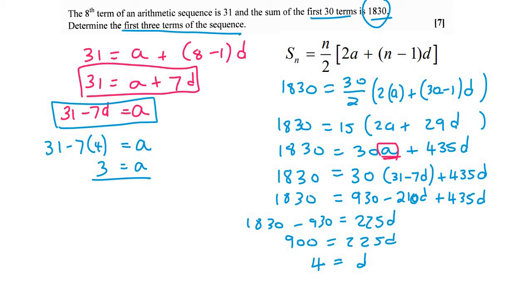Now they want the first three terms. So we know that term 1 would be A, which is equal to 3. Term 2 would be A plus D. You can do this in other ways if you want. You could plug it into the term formula. And that's going to be 3 plus 4, which is 7.